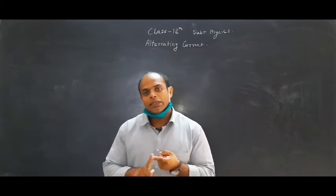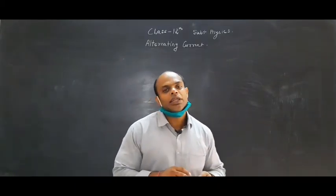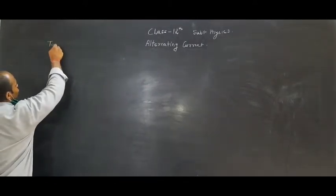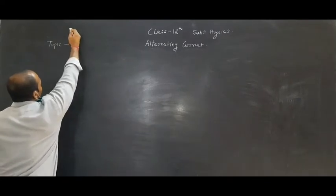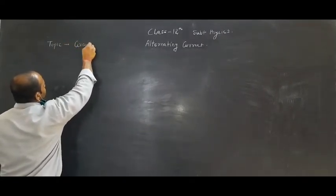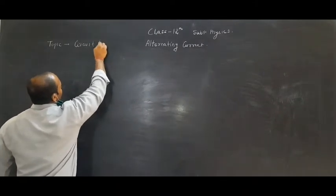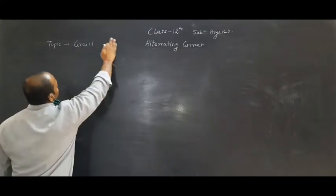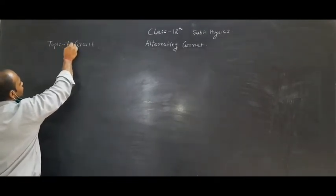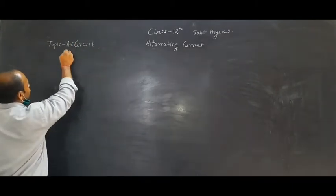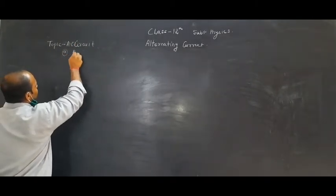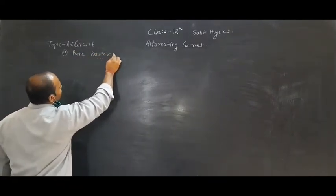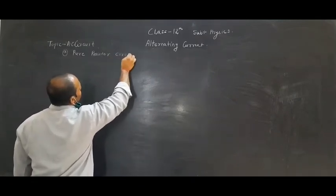In this we will do L circuit, R circuit and C circuit — purely L circuit, R circuit and C circuit. So our today's topic is AC circuits. The second part is pure resistor circuit. That is pure resistor circuit.